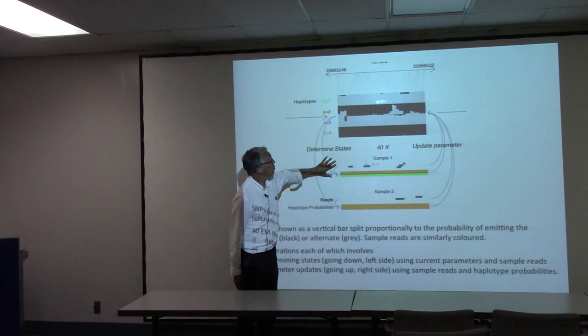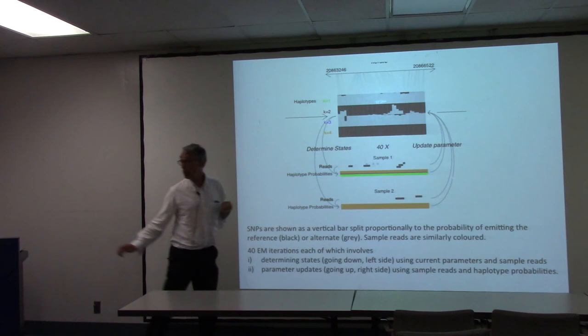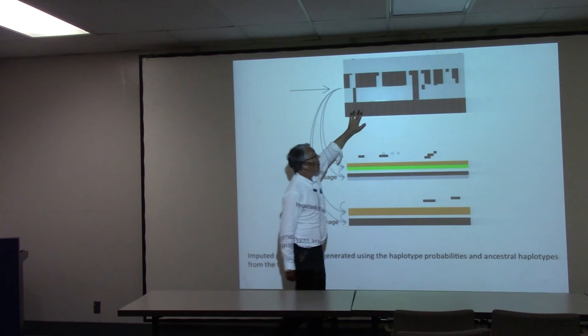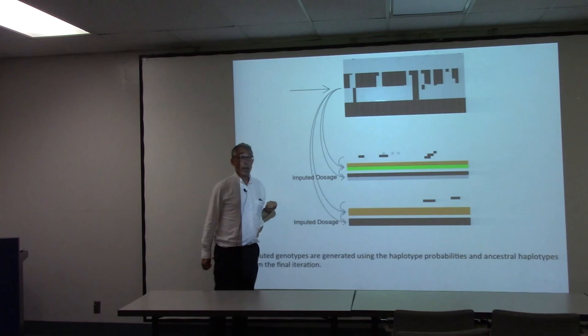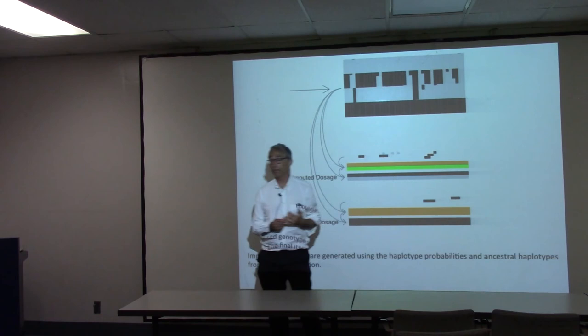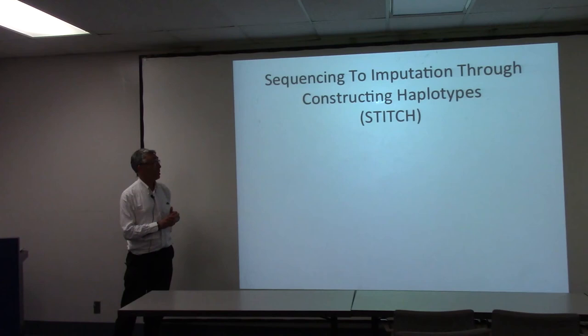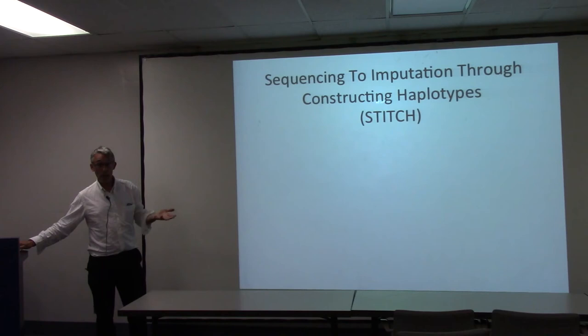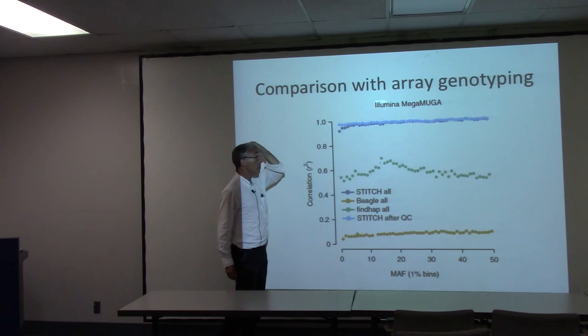This stage of our method simply works out what the progenitors might be at any particular locus. Once we've done that, it's relatively straightforward to use the same approach for imputation — because now we have what we think are the progenitor haplotypes, and we can impute and get our genotypes from that. It's a two-stage process: one, to work out the progenitors; and secondly, to do the imputation. This method, which we've termed sequencing to imputation through constructing the haplotypes (STITCH), we've checked against genotypes from an array.